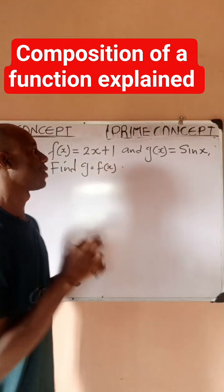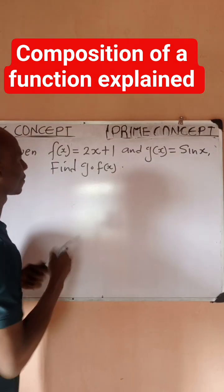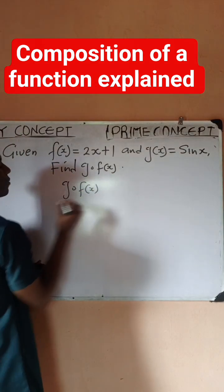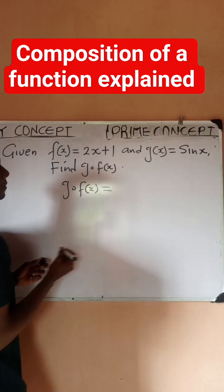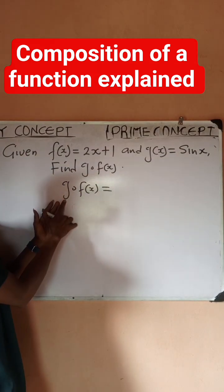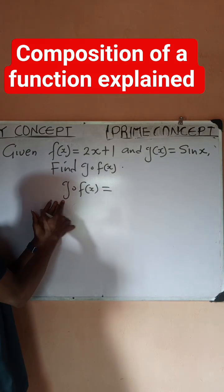Let's see how it works. My g composition f simply means that wherever I see x in g - since this is g, the one at the left side is g - wherever I see x in g, let me just replace it with f.